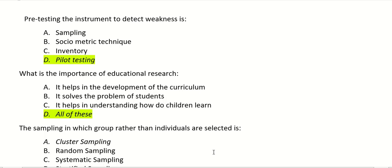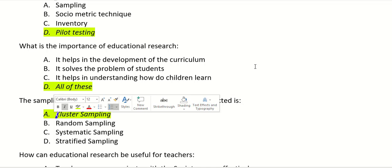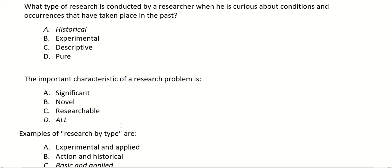Sampling in which groups rather than individuals are selected is: cluster sampling, random sampling, or systematic sampling? The right answer is cluster sampling. What type of research is conducted when a researcher is curious about conditions and occurrences that have taken place in the past? The answer is historical research.